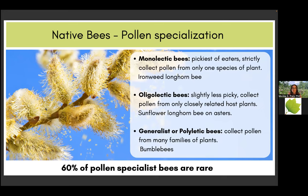Bees collect nectar for feeding themselves, and they also collect pollen for the larval stages. Pollen is really high in amino acids and nutrition — perfect nutrition for bee larvae. Native bees collect the pollen, form a little pollen ball, and place it in their nest, laying one egg on top. When the bee egg hatches, the larva will feed on this pollen.